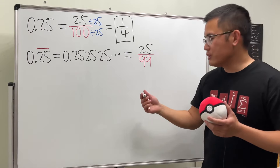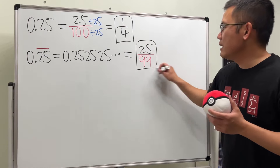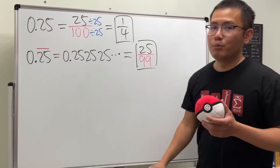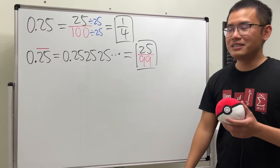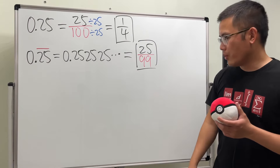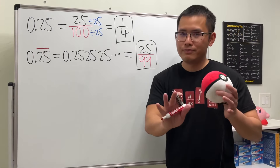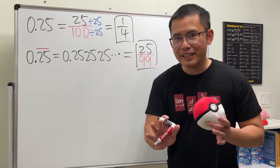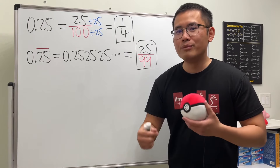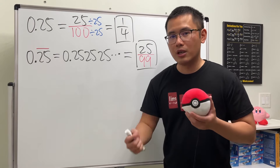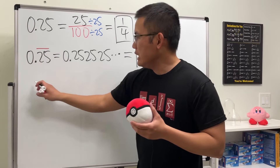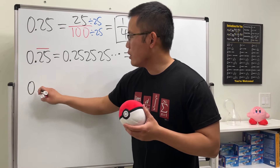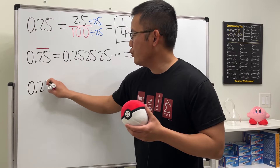Now, 25 over 99 — can we reduce this? 5 goes into 25, but 5 does not go into 99 because it doesn't end with zero or five. So we cannot reduce this, and that's the answer. Now let's make it a little more challenging.